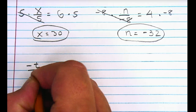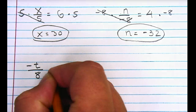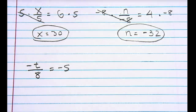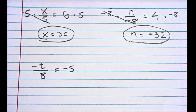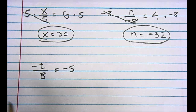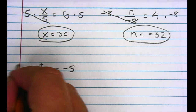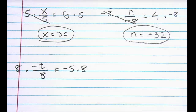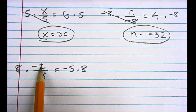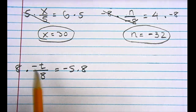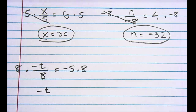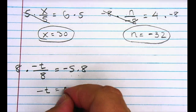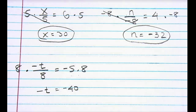If I have negative t divided by 8 is equal to 5, I'm going to undo dividing negative t by 8 by multiplying both sides by 8. 8 times negative t divided by 8 gives me negative t on one side. On the other side I have 5 times 8, which is 40. But I'm not done yet because I have negative t is equal to negative 40.